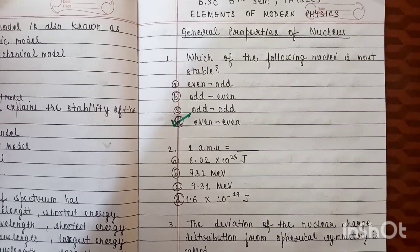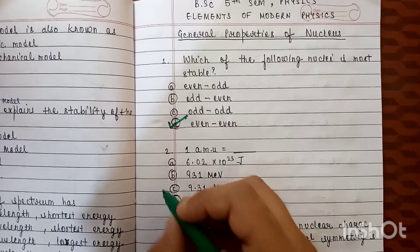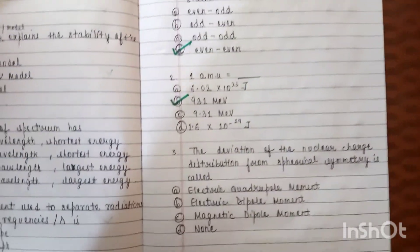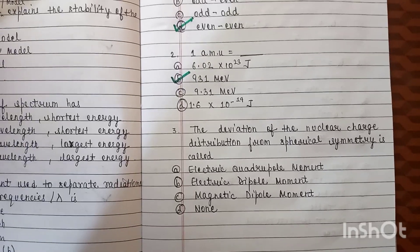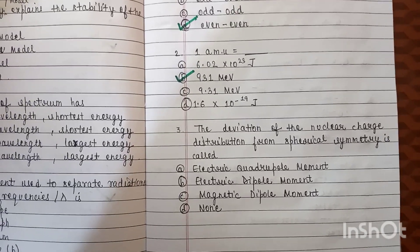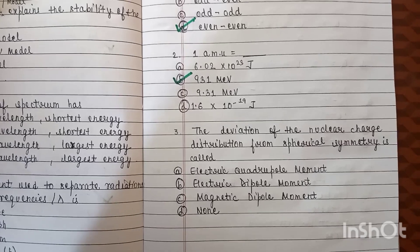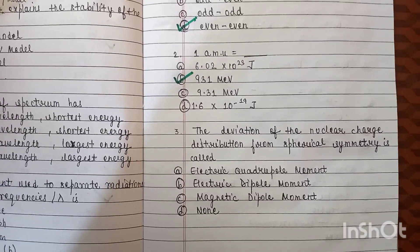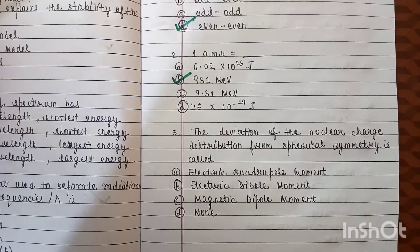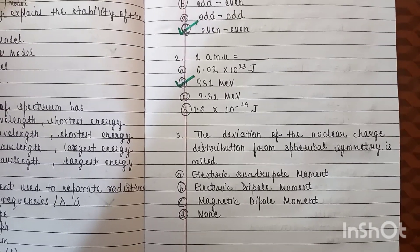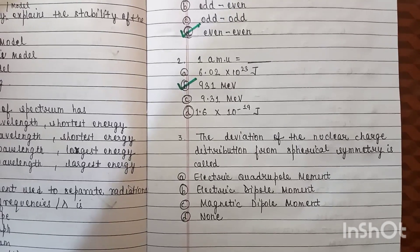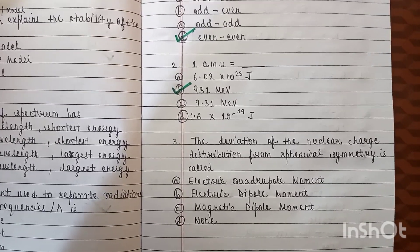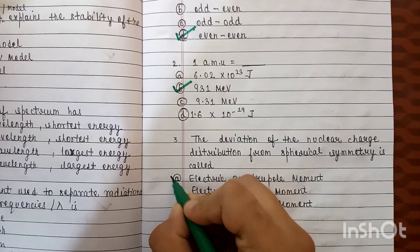The correct option for this is option B: 931 mega electron volt. Question number 3: the deviation of the nuclear charge distribution from spherical symmetry is called — Option A: electric quadrupole moment. Option B: electric dipole moment. Option C: magnetic dipole moment. Option D: none. The correct option is option A, electric quadrupole moment.